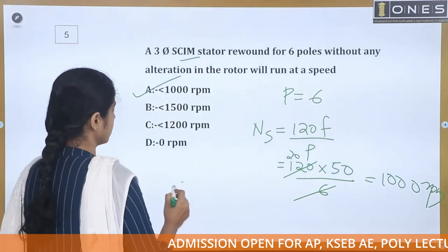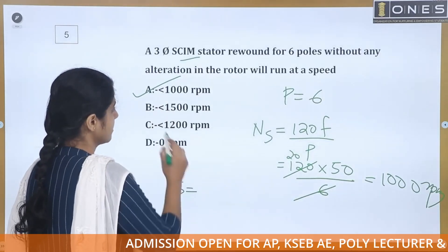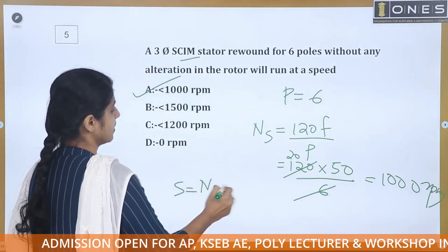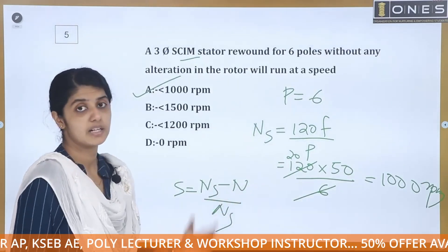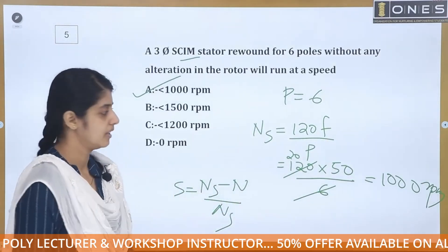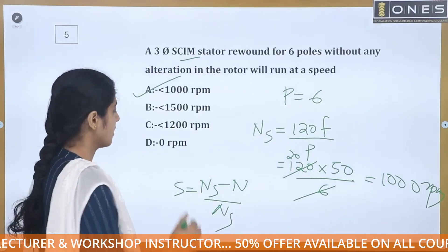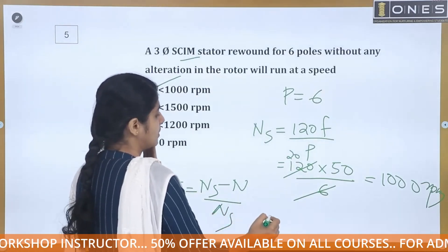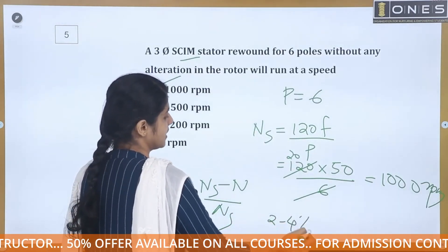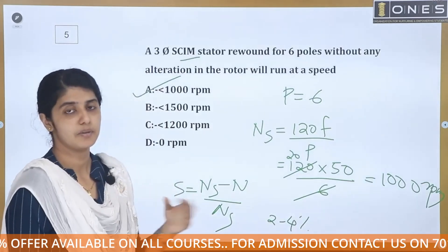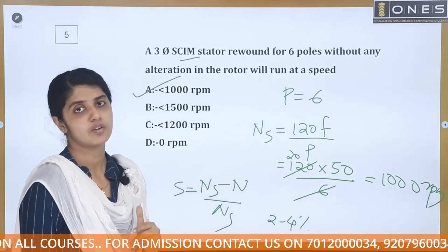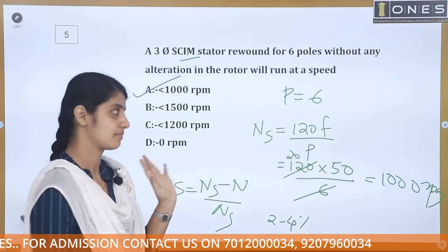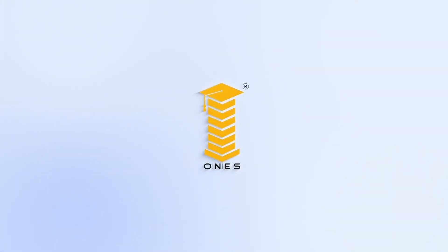The slip is defined as S = (Ns - N) / Ns. The motor speed always slips below the synchronous speed, typically by 2 to 4 percent. Therefore the motor will not run at 1000 RPM but at a speed slightly less than 1000 RPM. The correct answer is: less than 1000 RPM.